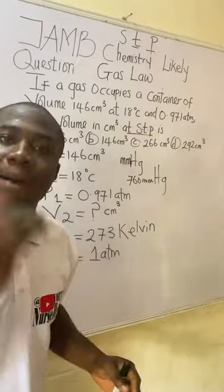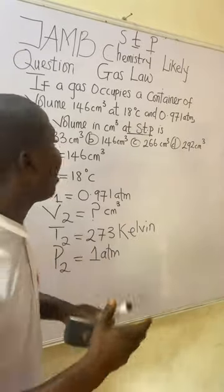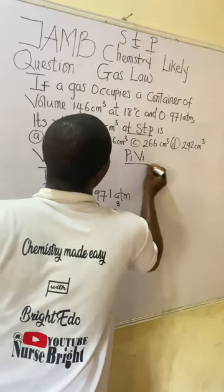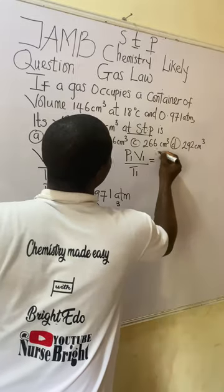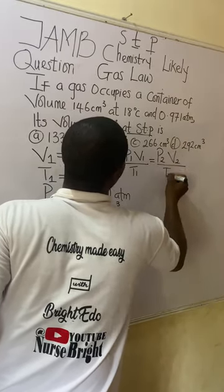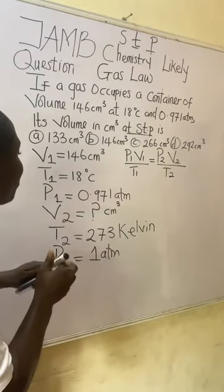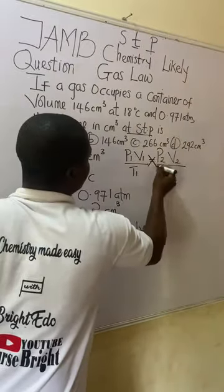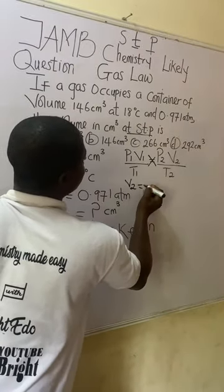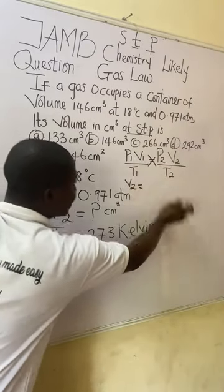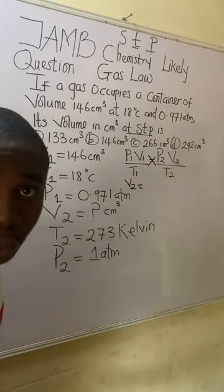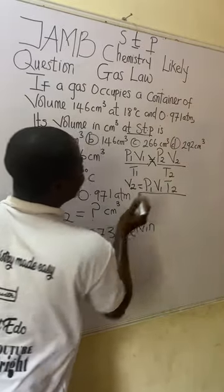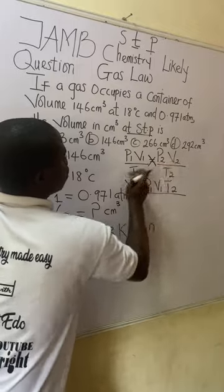The general gas equation formula is: P1V1 / T1 = P2V2 / T2. We are asked to find V2, so we make V2 the subject by cross-multiplying. This gives us: V2 = (P1 × V1 × T2) / (P2 × T1).